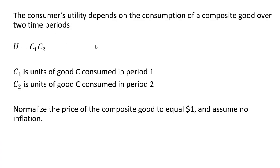Here's the setup. The consumer's utility depends on a composite good over two time periods. Utility equals C₁ times C₂, where the subscripts represent the period of consumption. C₁ is the composite good consumed in period 1, and C₂ is defined in a similar manner. We're going to normalize the price of the composite good to equal $1, and we're going to assume that there is no inflation in this model.